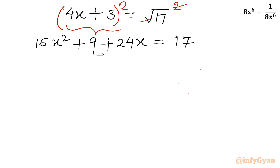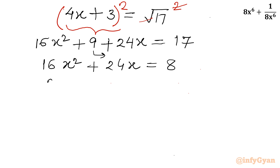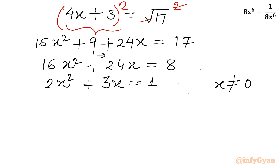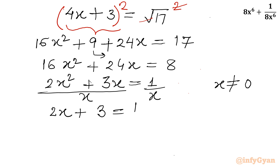Taking 9 to the right: 16x² + 24x = 17 − 9 = 8. The equation is divisible by 8, so dividing by 8 gives 2x² + 3x = 1. Since x is non-zero, I can divide both sides by x, giving 2x + 3 = 1/x.